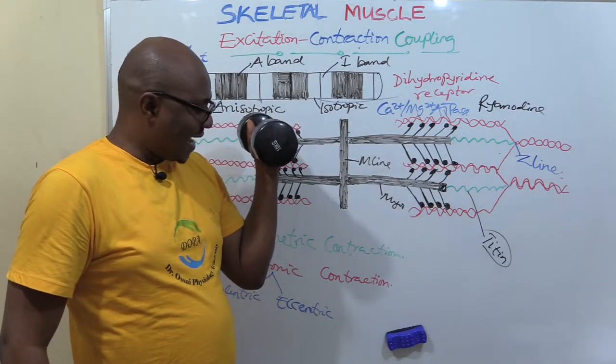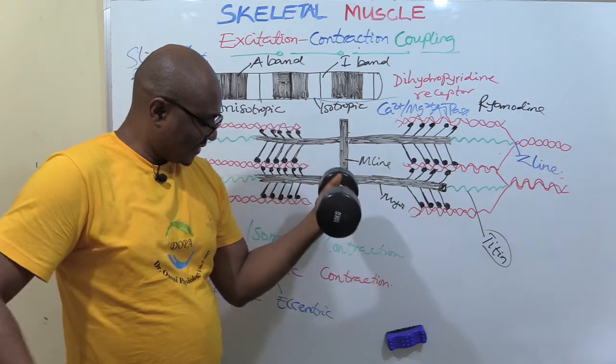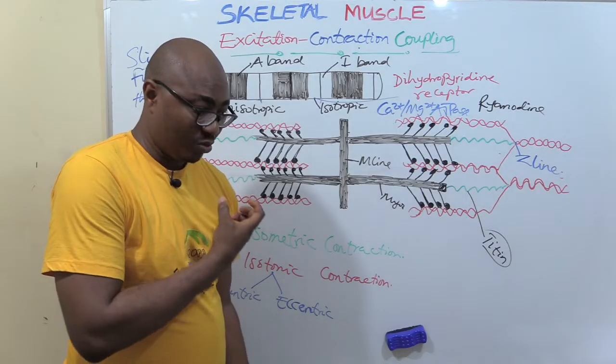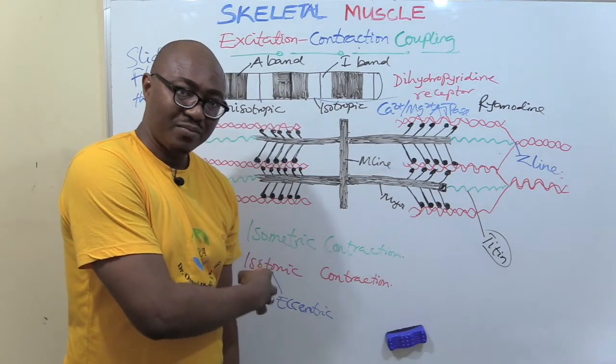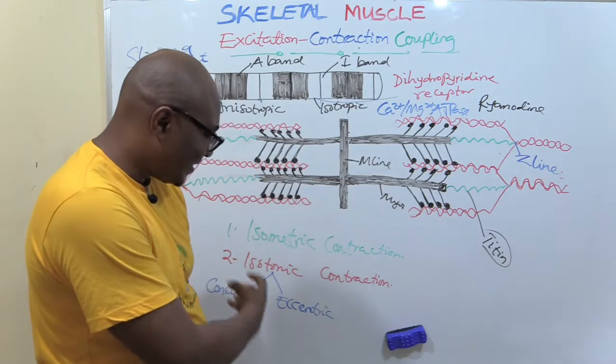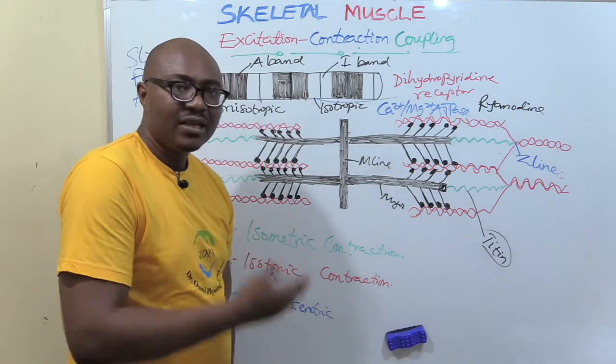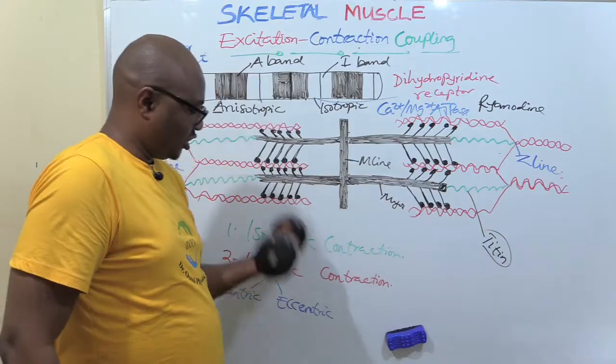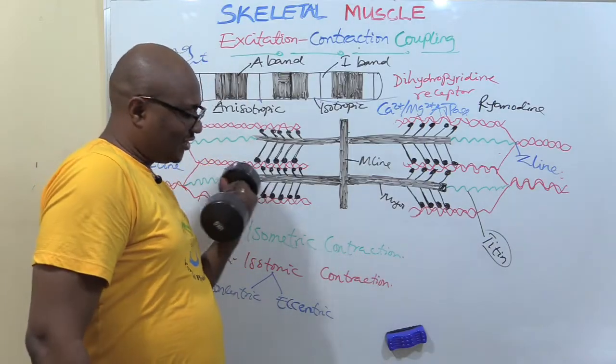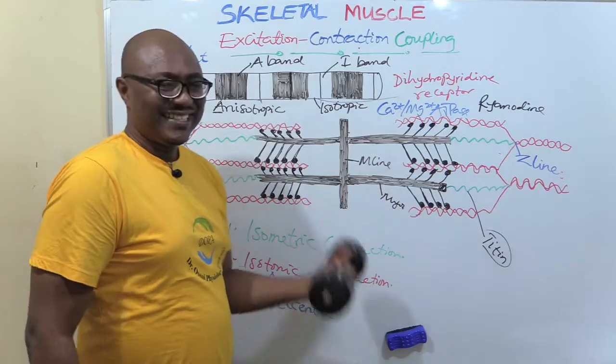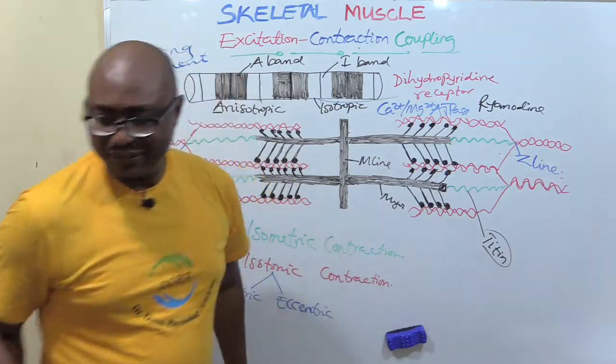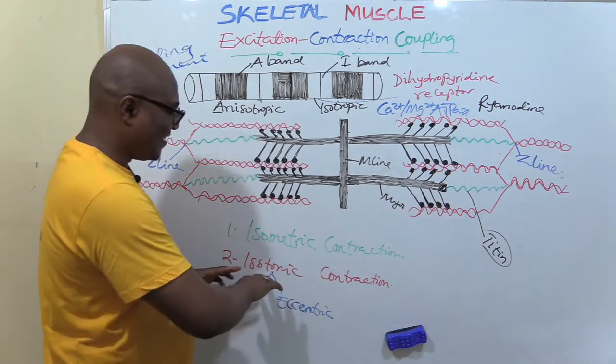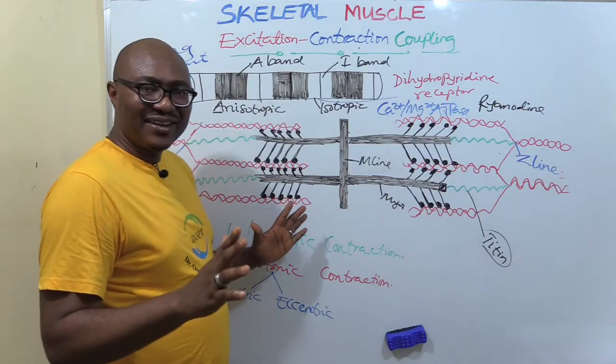Now I want to take it down. My bicep is lengthening. There's contraction. I'm using force. The load is this thing. The load is weighing on my muscle. There's force generation. But it's lengthening. So eccentric is lengthening contraction, while concentric is shortening. Lengthening, shortening, lengthening. Concentric, eccentric. Concentric, eccentric. So that's what happens. These are the two types of muscle contraction and the types of isotonic muscular contraction.